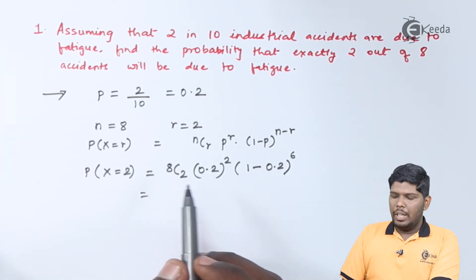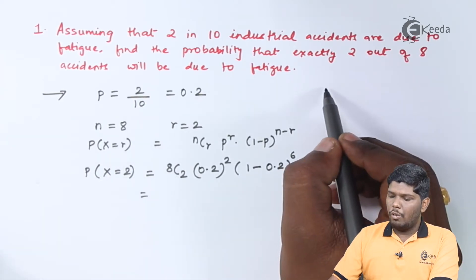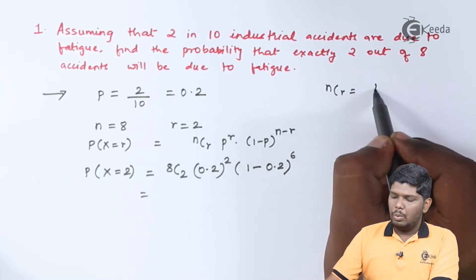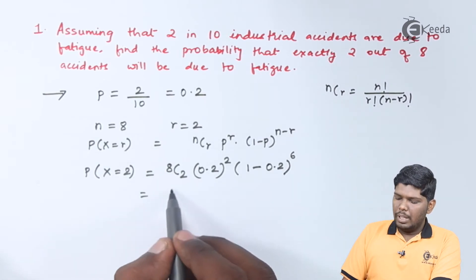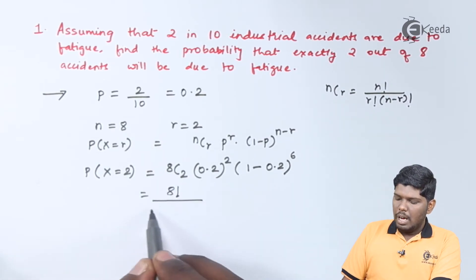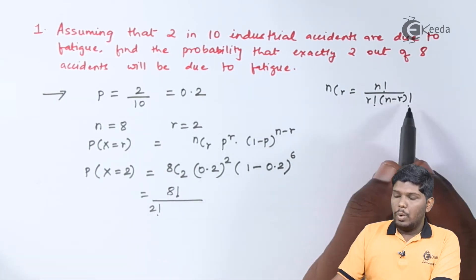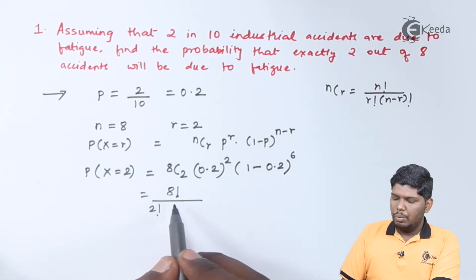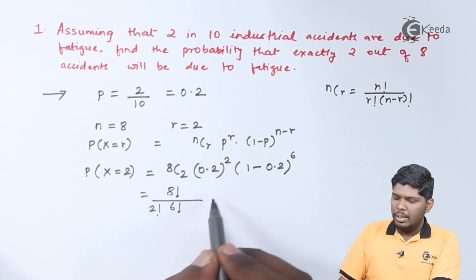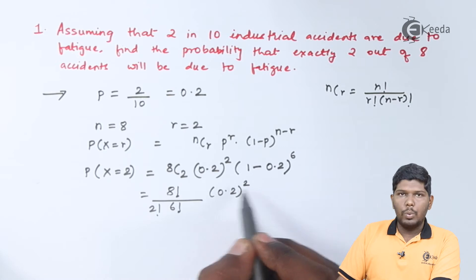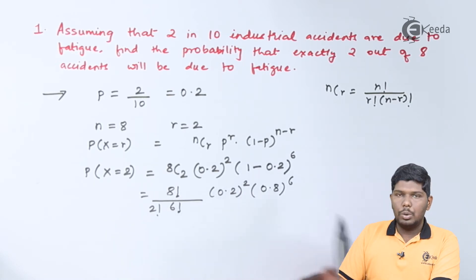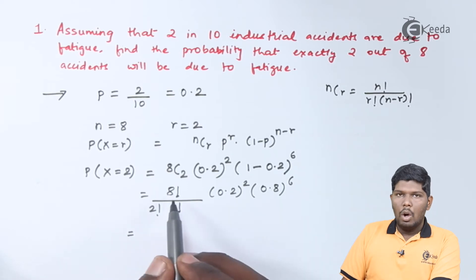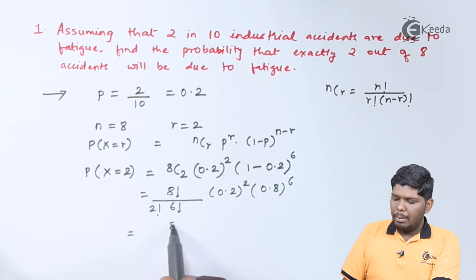On further solving, 8C2 can be found using the formula nCr which equals n factorial upon r factorial times (n - r) factorial. This gives you 8 factorial upon 2 factorial times 6 factorial. Here we have (0.2) squared and (1 - 0.2) gives 0.8 raised to 6. On further solving, 8 factorial can be written as 8 times 7 times 6 factorial.